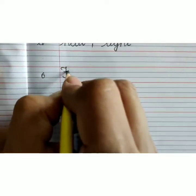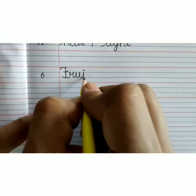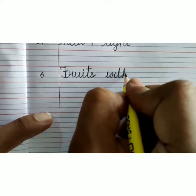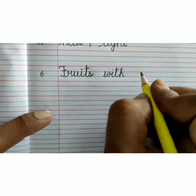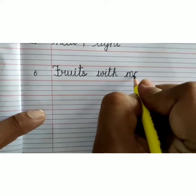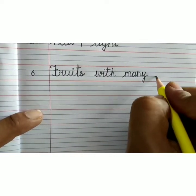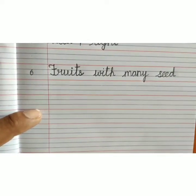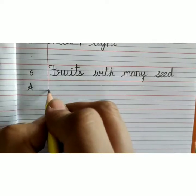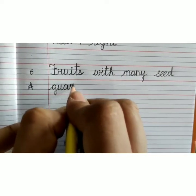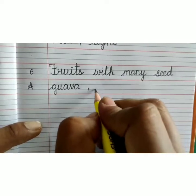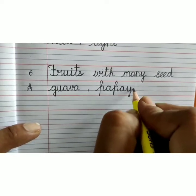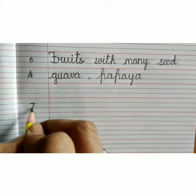Capital F-R-U-I-T-S, fruits, W-I-T-H, with, M-A-N-Y, many, S-E-E-D, seed. Fruits with many seed. Answer: G-U-A-V-A, guava, comma, P-A-P-A-Y-A, papaya. Leave one line, number 7.